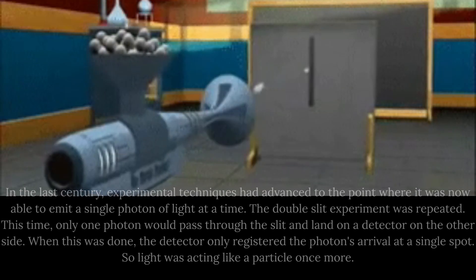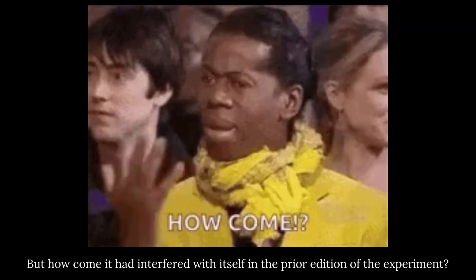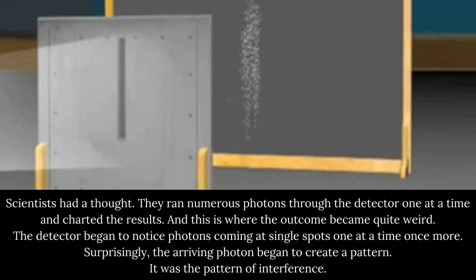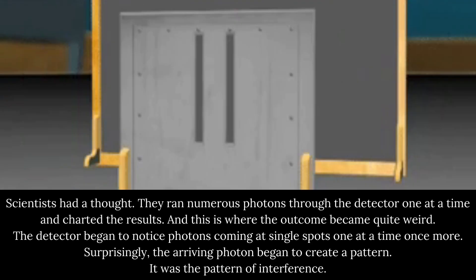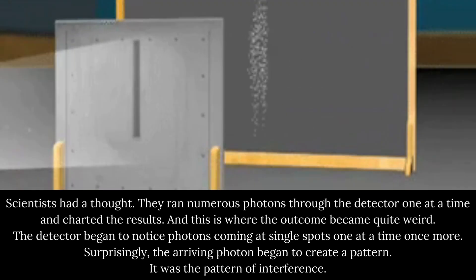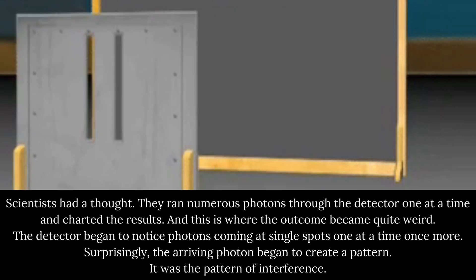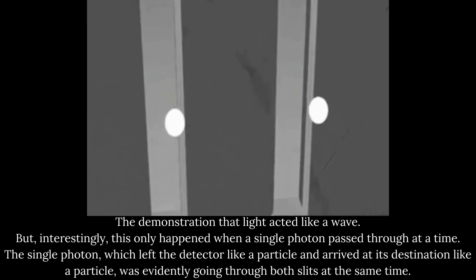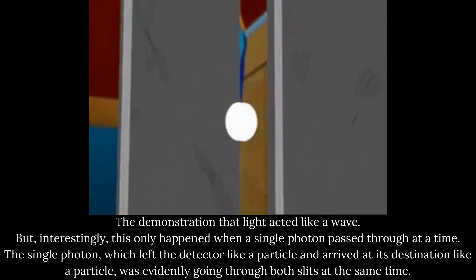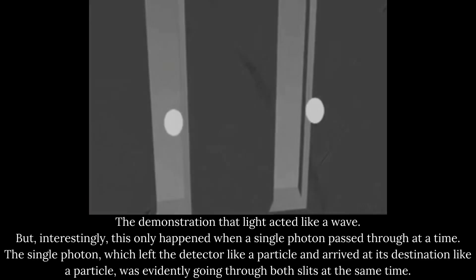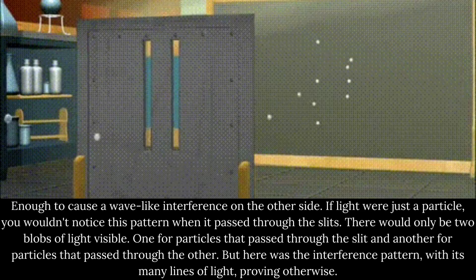So light was acting like a particle once more. But how come it had interfered with itself in the prior edition of the experiment? Scientists had a thought. They ran numerous photons through the detector one at a time and charted the results. And this is where the outcome became quite weird. The detector began to notice photons coming at single spots one at a time once more. Surprisingly, the arriving photon began to create a pattern. It was the pattern of interference. The demonstration that light acted like a wave. But interestingly, this only happened when a single photon passed through at a time. The single photon, which left the detector like a particle and arrived at its destination like a particle, was evidently going through both slits at the same time. Enough to cause a wave-like interference on the other side.